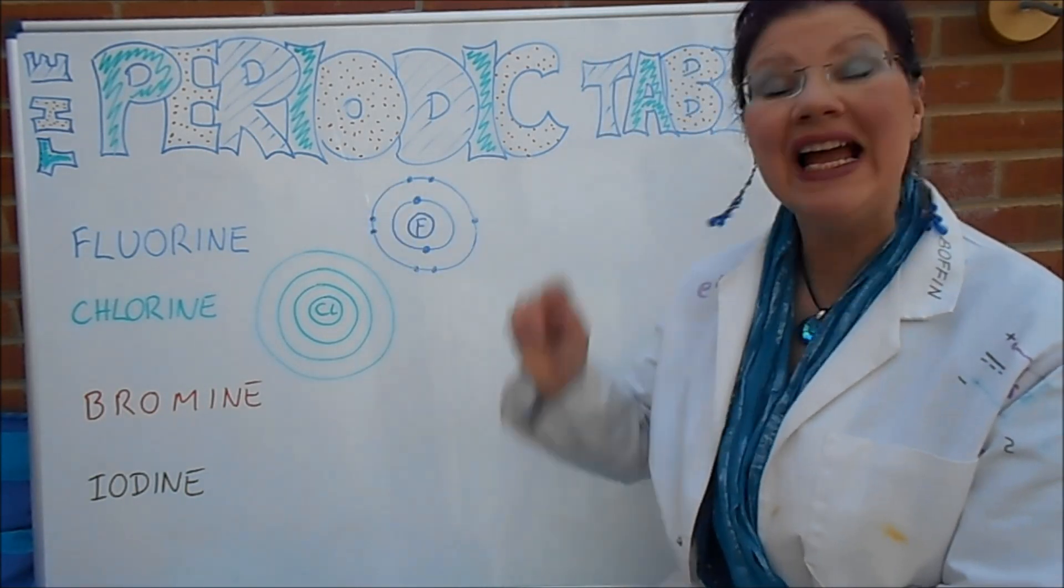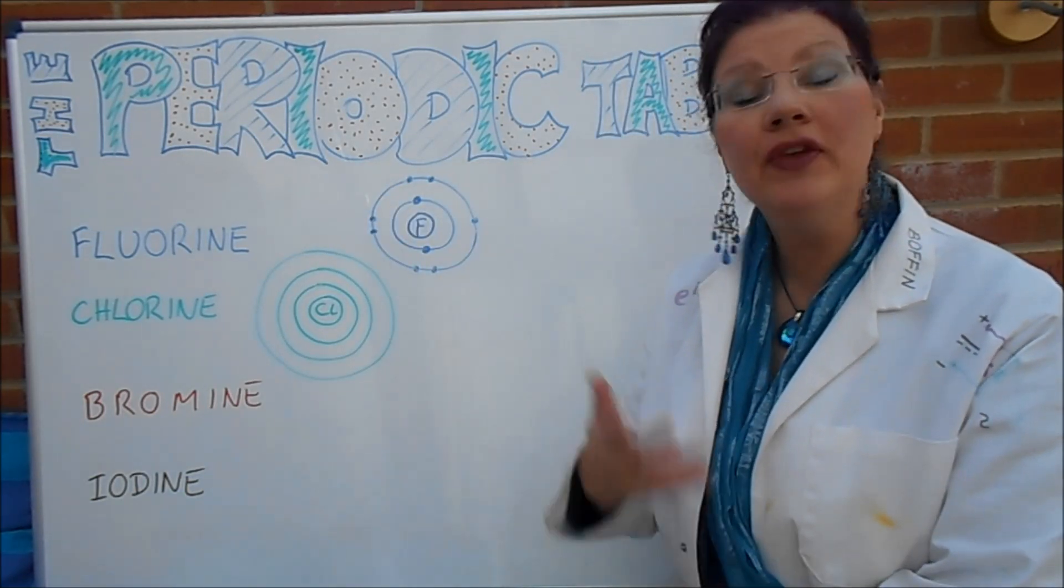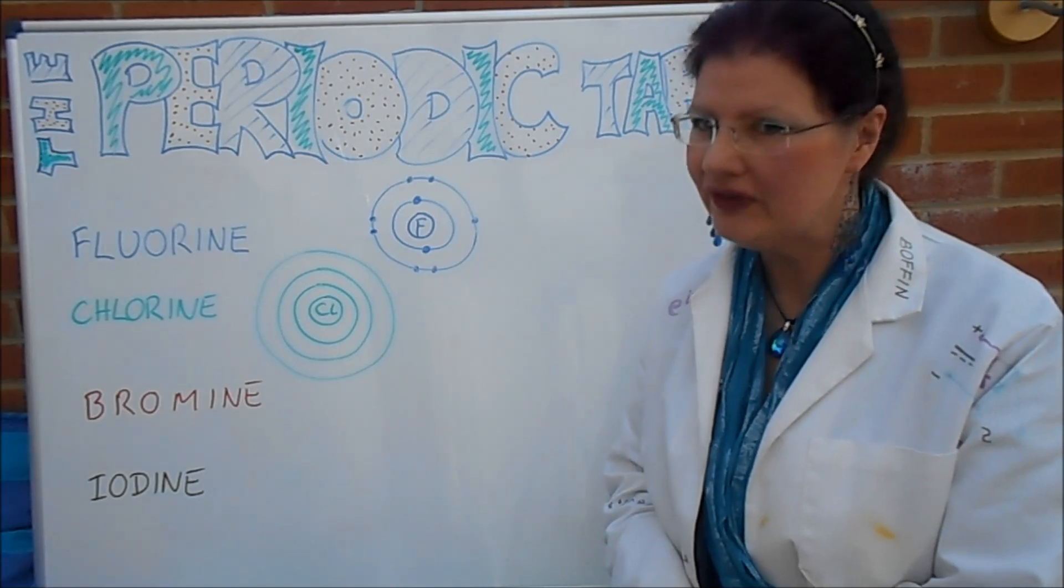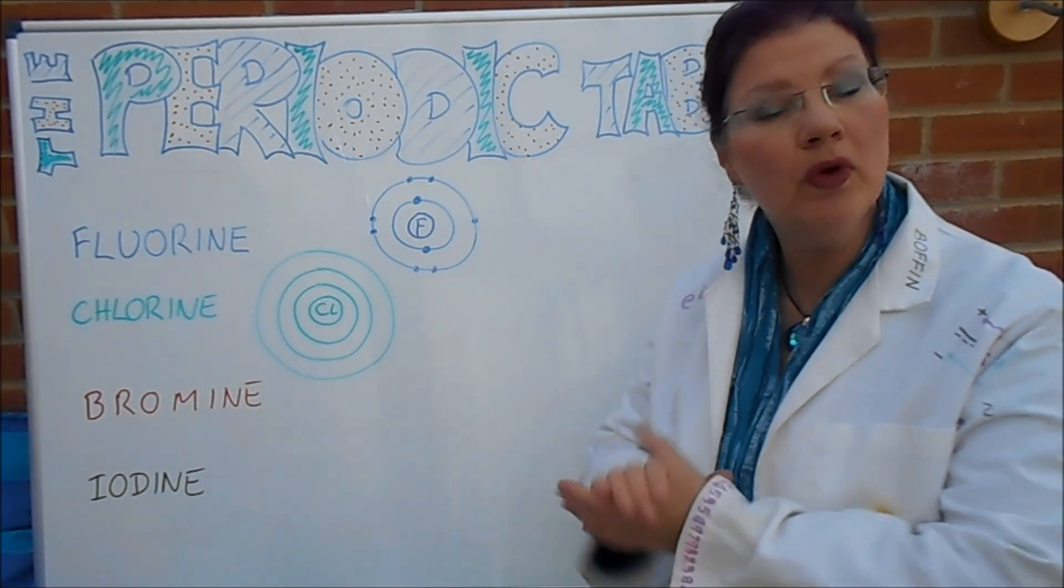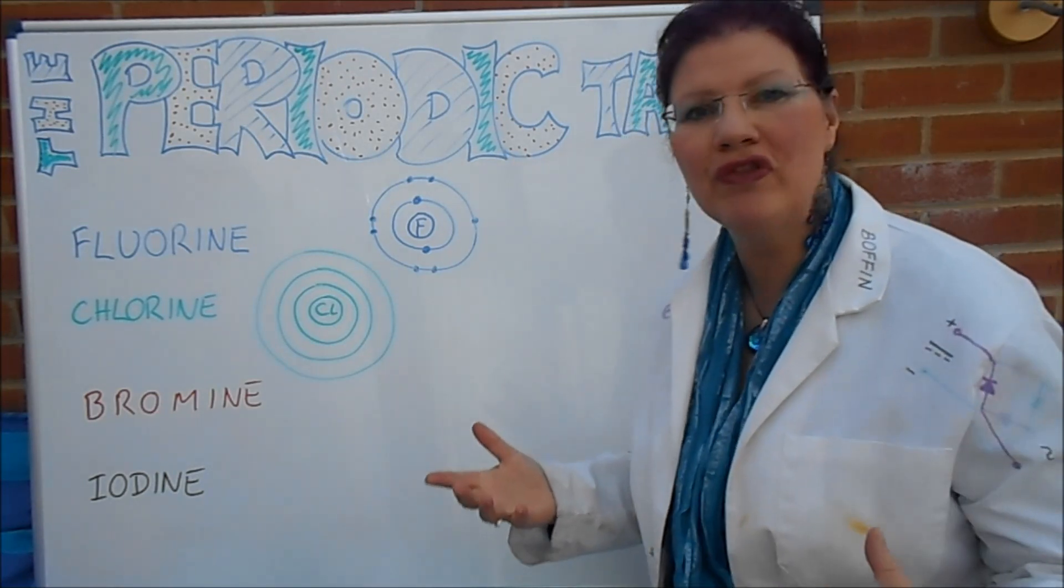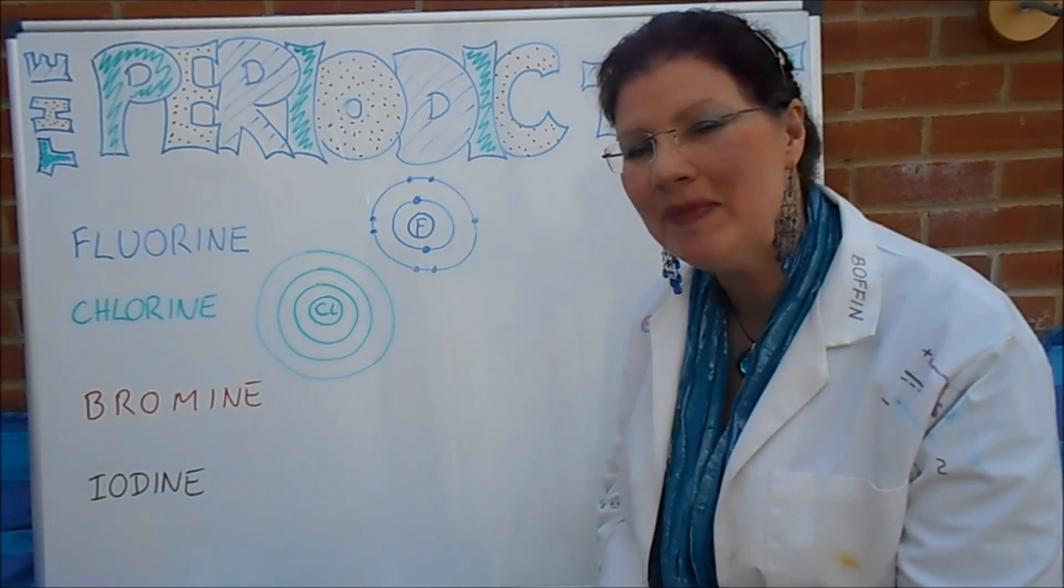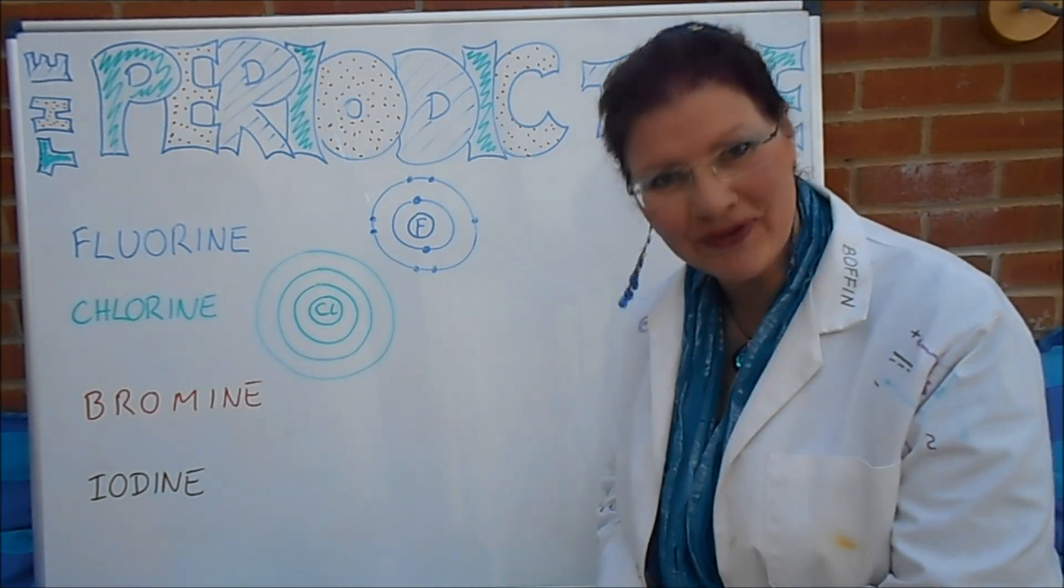Today we're looking at the Periodic Table. This is part of a series where we're looking at all the different groups in the Periodic Table. If you're not sure what a group is, have a look at one of the earlier videos where we talk about the structure of the Periodic Table, but here's just a quick reminder of where Group 7 comes.